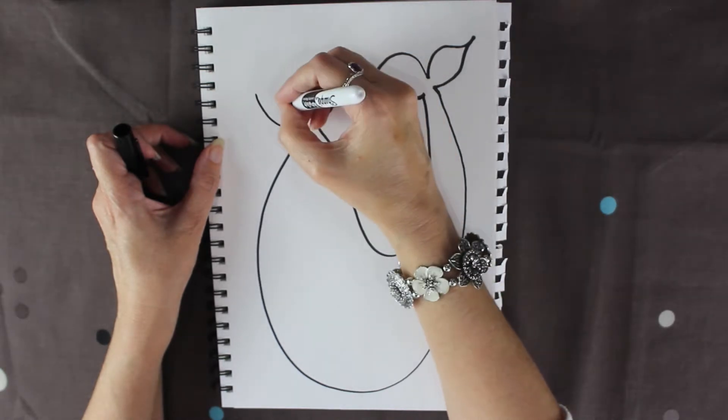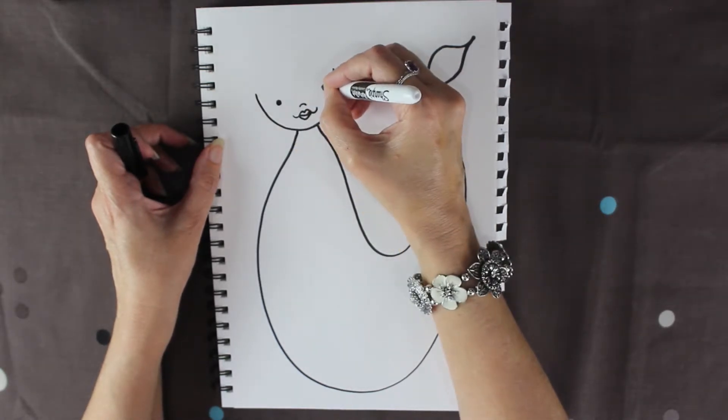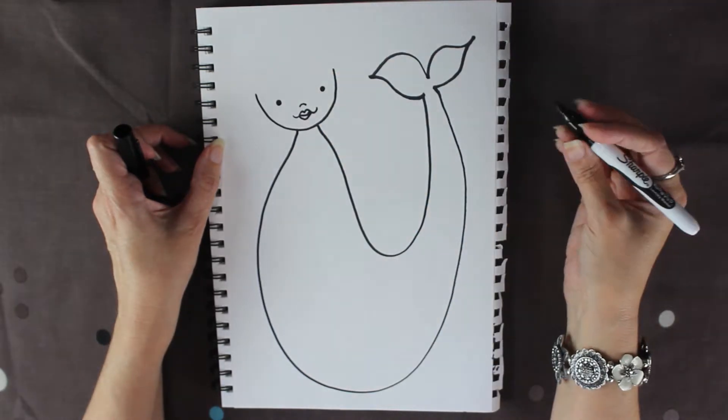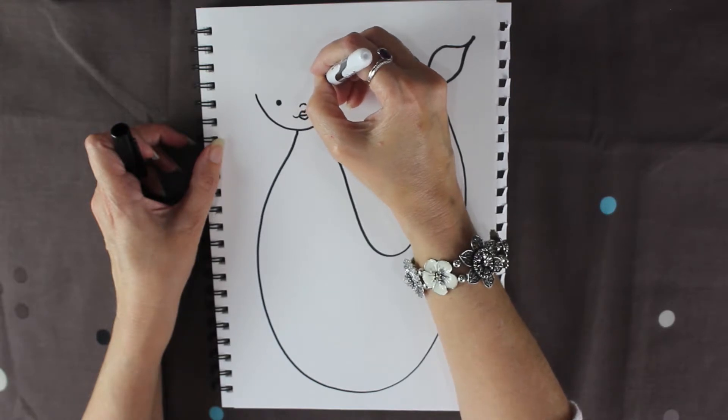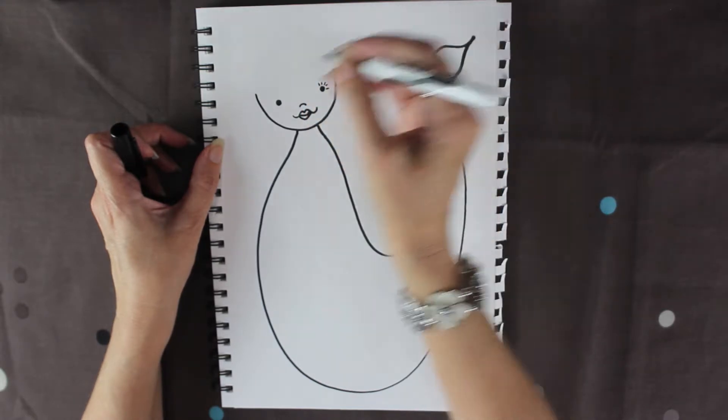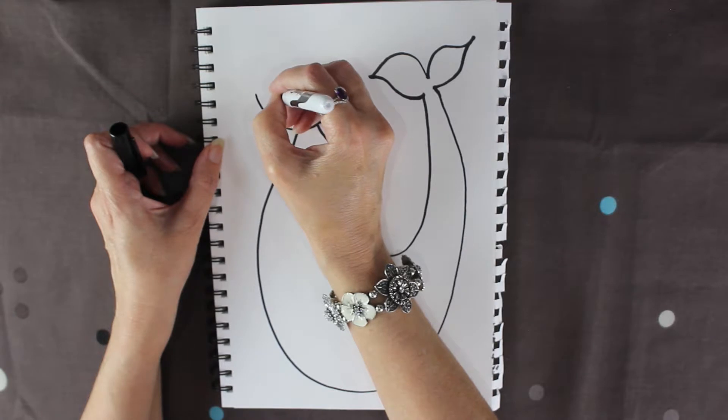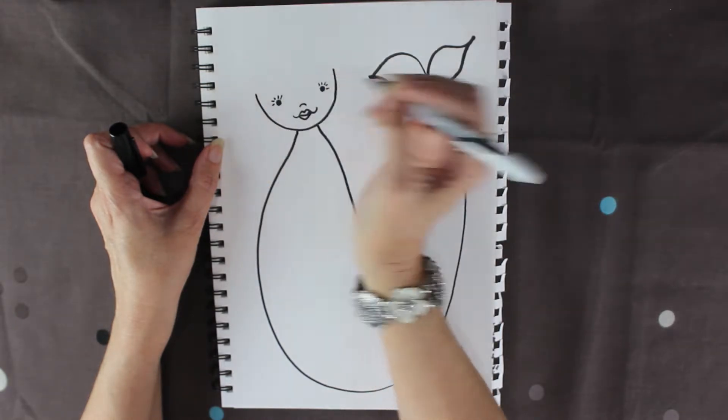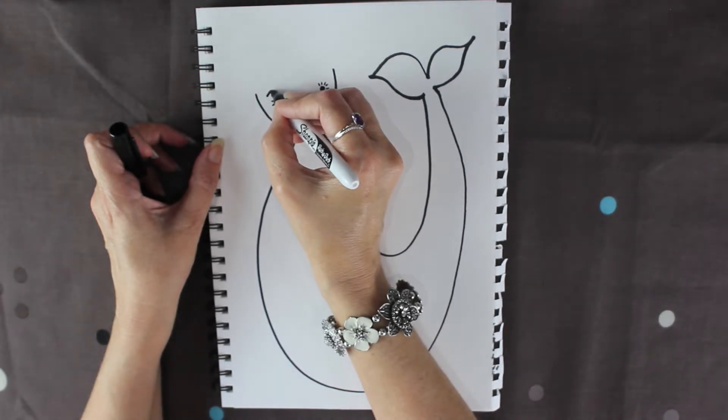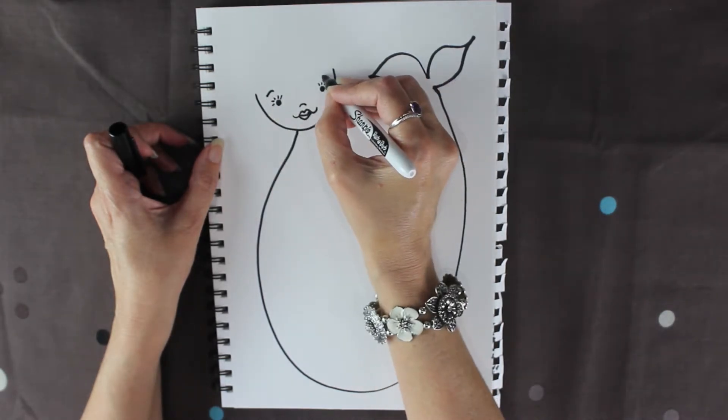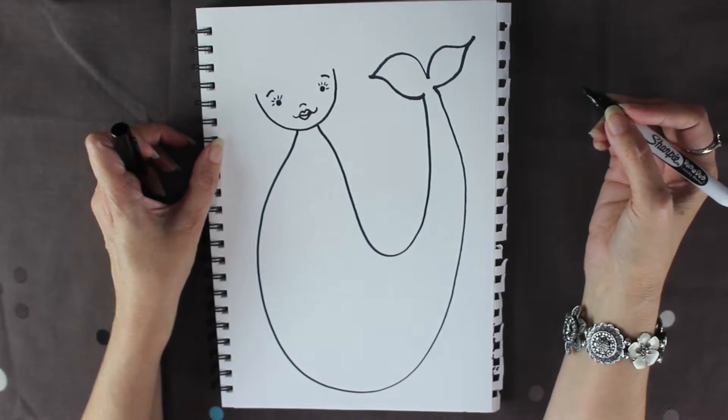I'm only going to give her some little round black eyes. One on that side, one on that side, and I'm definitely giving her some lashes. So off you go and give your mermaid some lashes. She's also going to have some sweet little eyebrows on that side, one that side.